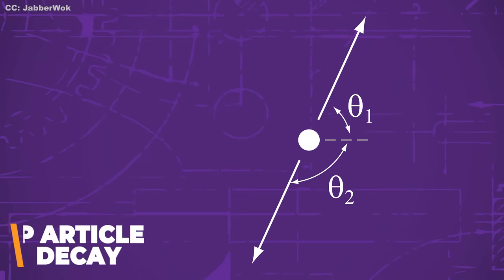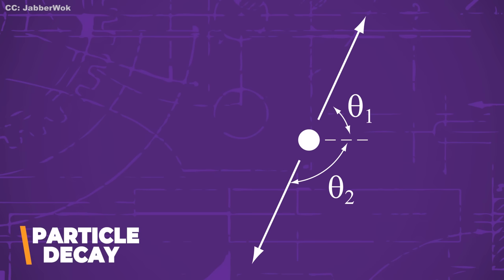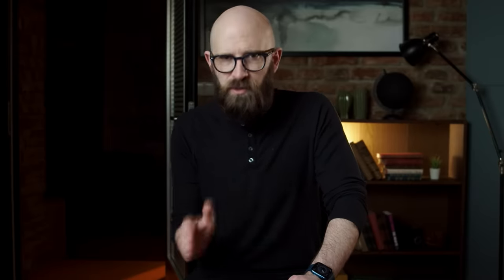When we approach the subatomic level, however, things get much less intuitive. Take the example of a decaying subatomic particle. The particle has no spin, but it decays into two spinning particles. Because of the conservation of angular momentum, if one of the particles is spun up, then the other must spin down. This makes sense at first, until you consider that this must remain true no matter where those two particles travel.